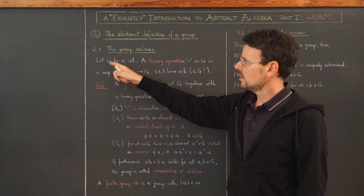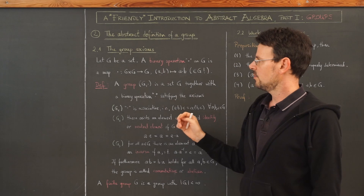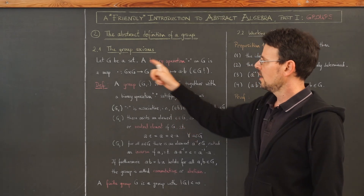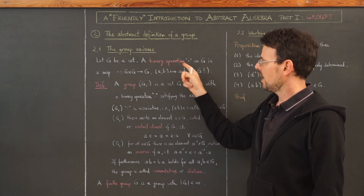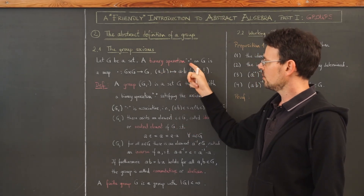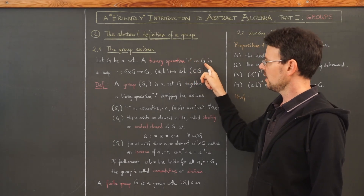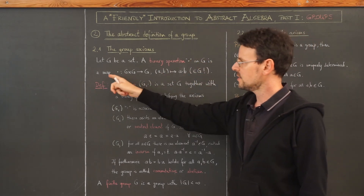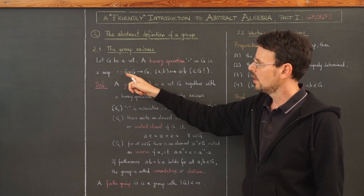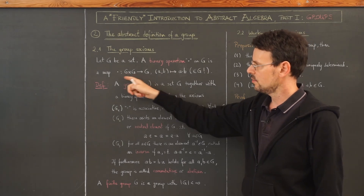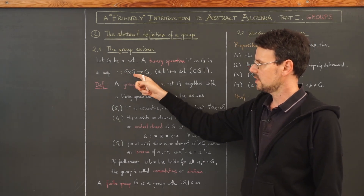We simply let G be any set, no matter how the elements look like. First of all, we define a binary operation — this dot — on this set, as a map going from the Cartesian product of the set with itself.